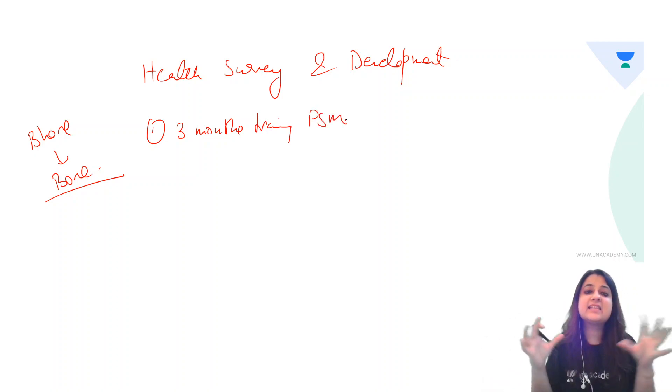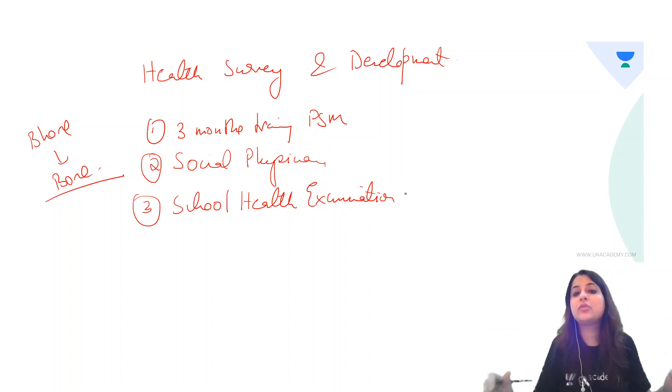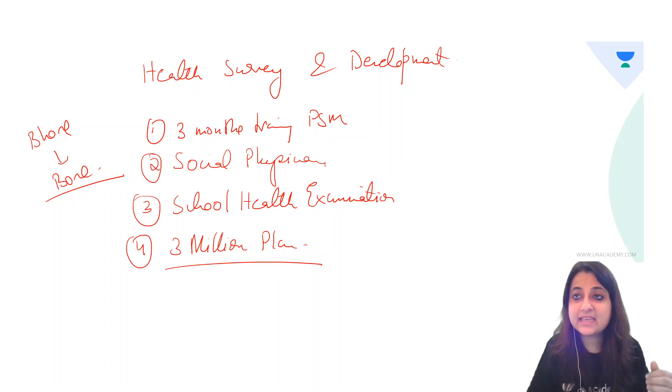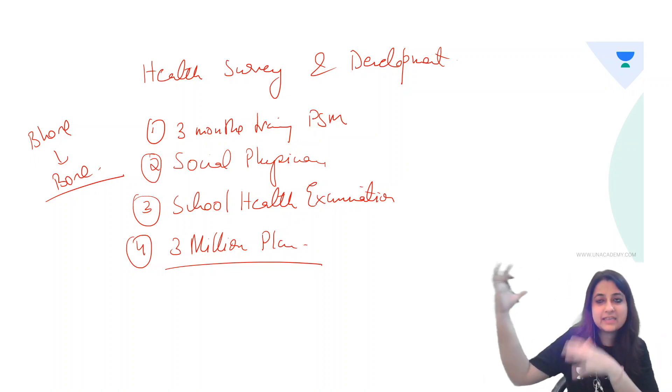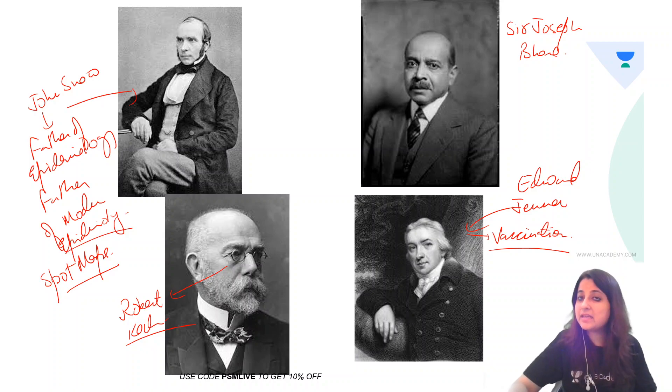Now, we all found social science a boring subject in school. So he gave the concept of social physicians. And also, he gave the concept of school health examination. This was also given by Sir Joseph Bhore. One more important concept he gave was three million plan. It was a very ambitious thing where he targeted on building PHCs and CHCs. PHCs with 75 beds, CHCs with even more number of beds, so it could benefit three million people. So these were some of the eminent personalities that you must remember.